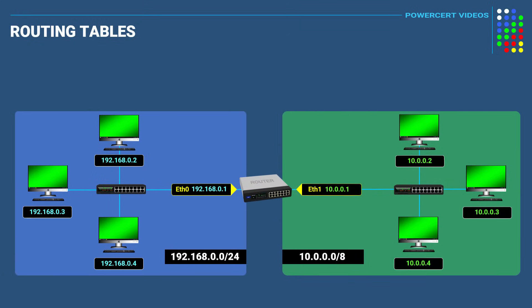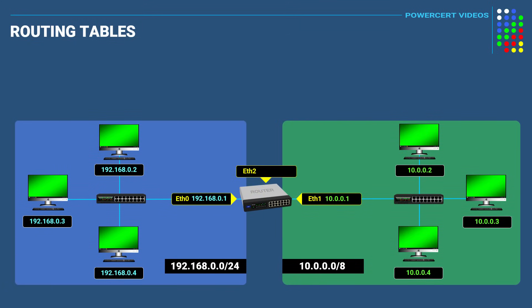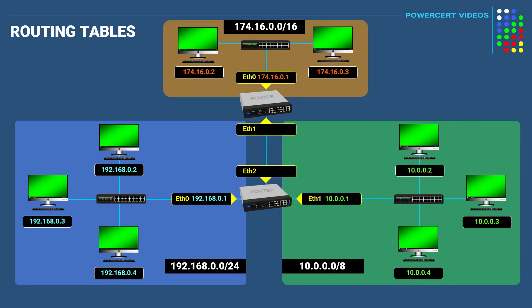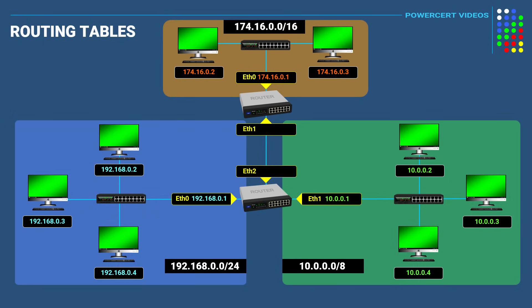In another example, let's add another interface to this router and connect another router and another network with computers to this setup. This network up here will be using a different IP address group of 174.16.0.0. Also, the interfaces between these two routers need their own IP address group so that the routers themselves can communicate with each other, so we'll give them a separate IP address group in the 125.0.0.0 network.